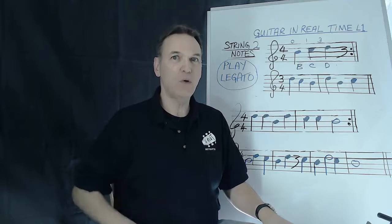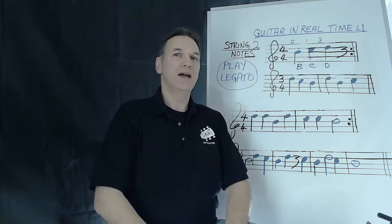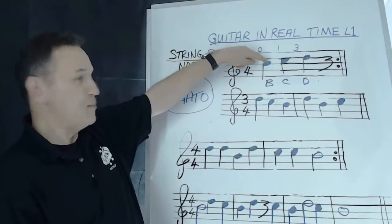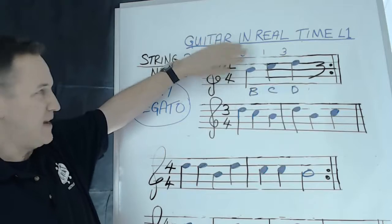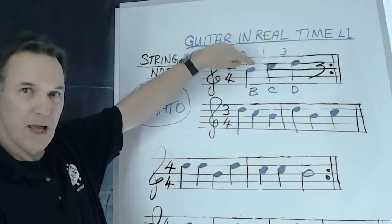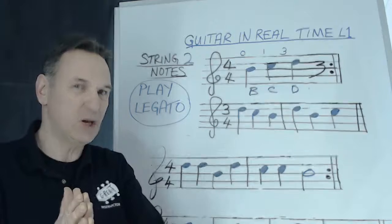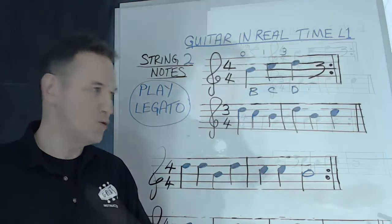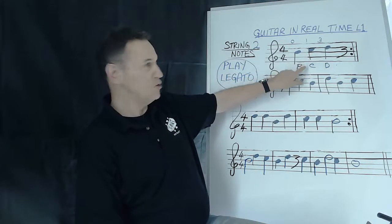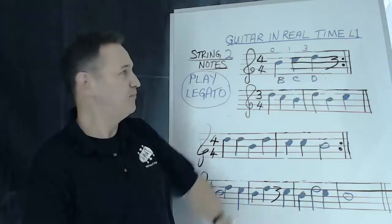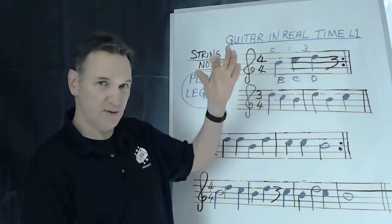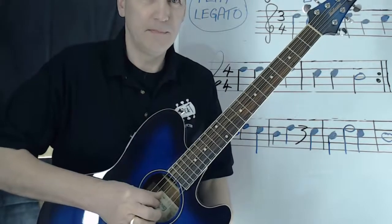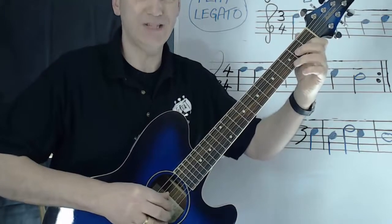John Chambley here again, and today we're going to take a look at the B string, the second string on the guitar. The note B is represented on the five-line staff as being on the middle line. The same way we played on the first string using fingers one and three, we're going to do exactly the same thing on the second string, giving us two notes: C and D. So we've got B the open string, C with the first finger, and D with the third finger.